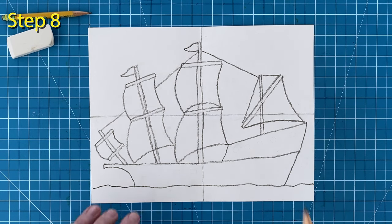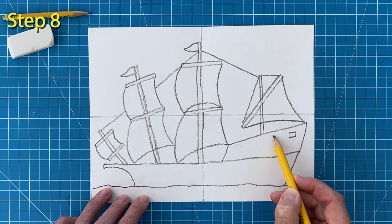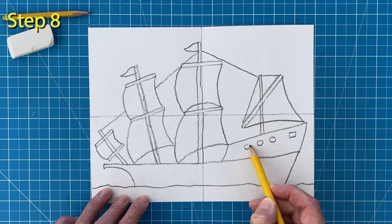Step number eight. To finish the ship add some round windows on the right side of the ship and some square ones on the left.